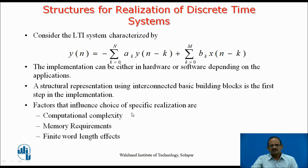Computational complexity refers to the number of operations such as additions, subtractions, divisions, and multiplications required to compute the output y(n). Memory requirement refers to the number of memory locations required for storing the system parameters, past inputs, past outputs, as well as any other intermediate computed values.